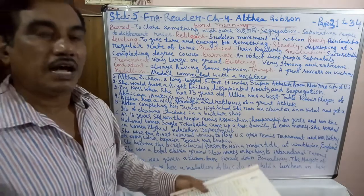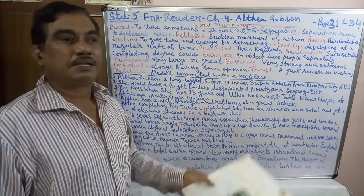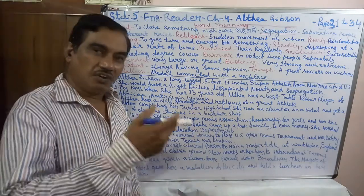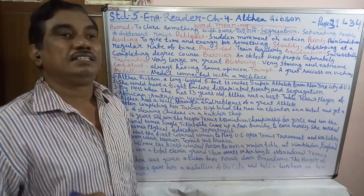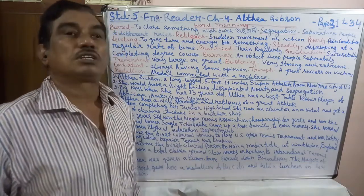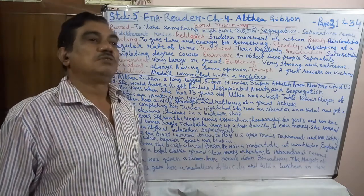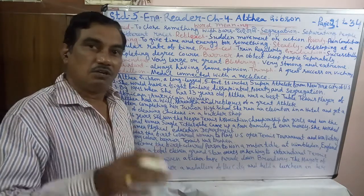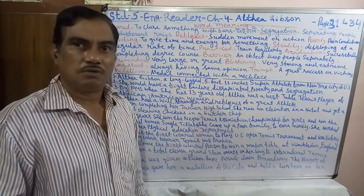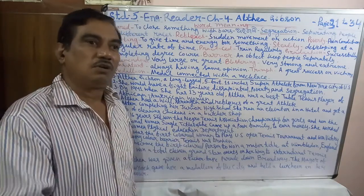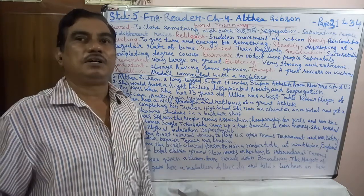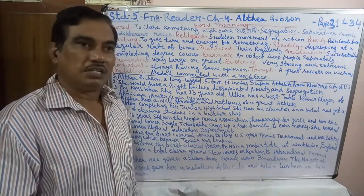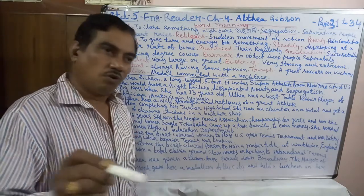Althea Gibson was an African American woman with long legs and a height of 11 inches above average, a super athlete from New York City. She fought against failure, disappointment, poverty, and segregation. There is no disappointment in our life if we avoid it, and she fought against all these failures.